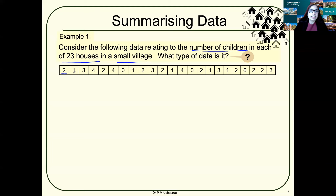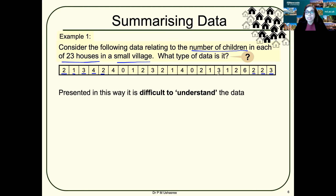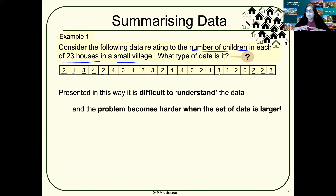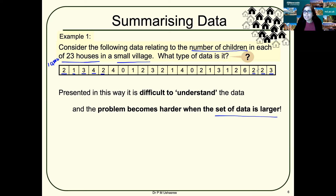In the first house you have two children, the second house one child, the third three children, the fourth four children, the fifth two children, and so on. The 21st house has two children, the 22nd two children, the 23rd three children. Does this arrangement make it easy to study the data? It's better to represent it in a simpler way, especially when you have large numbers of data — say 10,000 houses — it becomes very difficult to study.